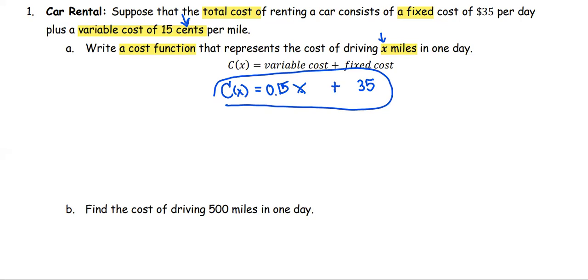The next part, Part B, we are going to find the cost of driving 500 miles in one day. As in the previous part, x is the number of miles. In this case, in Part B, the x value is 500. To compute the cost, substitute x with 500.